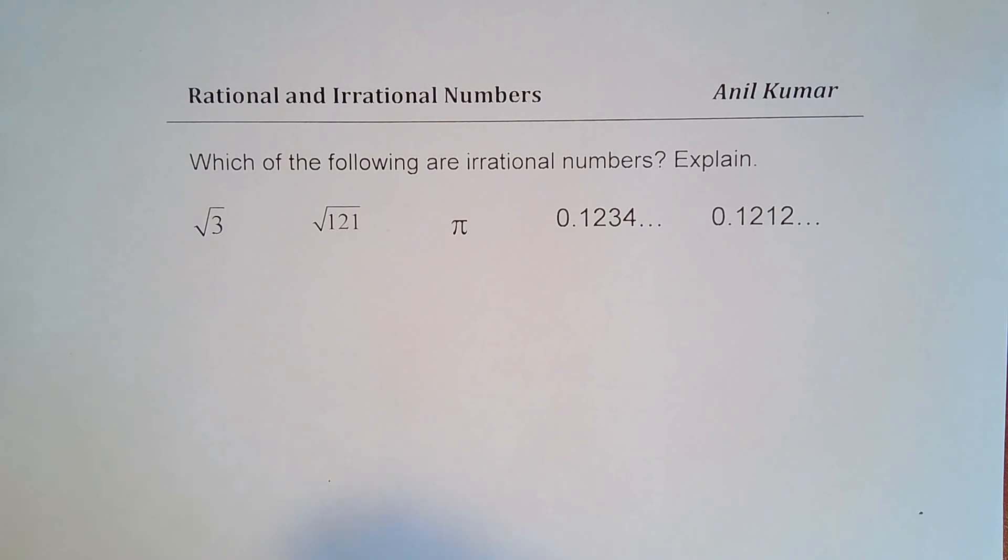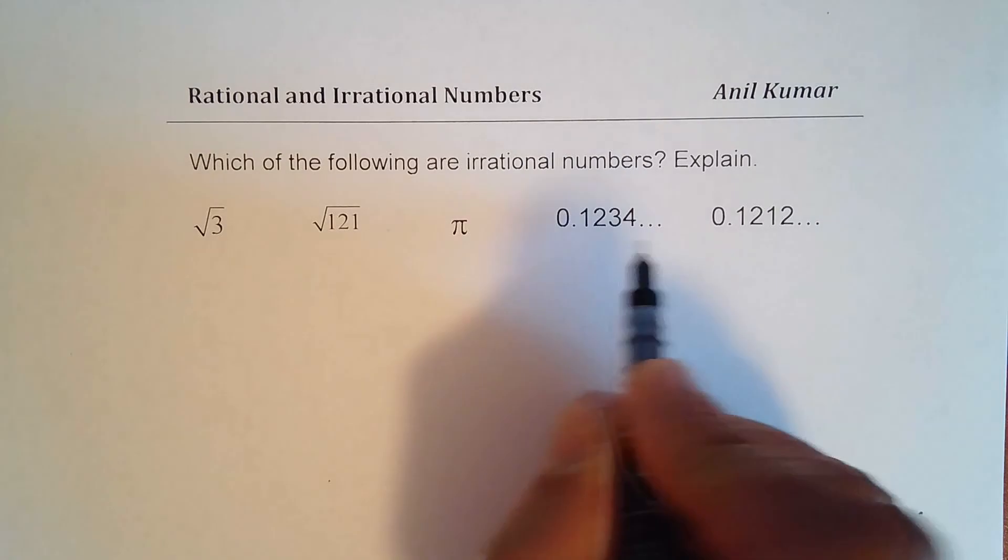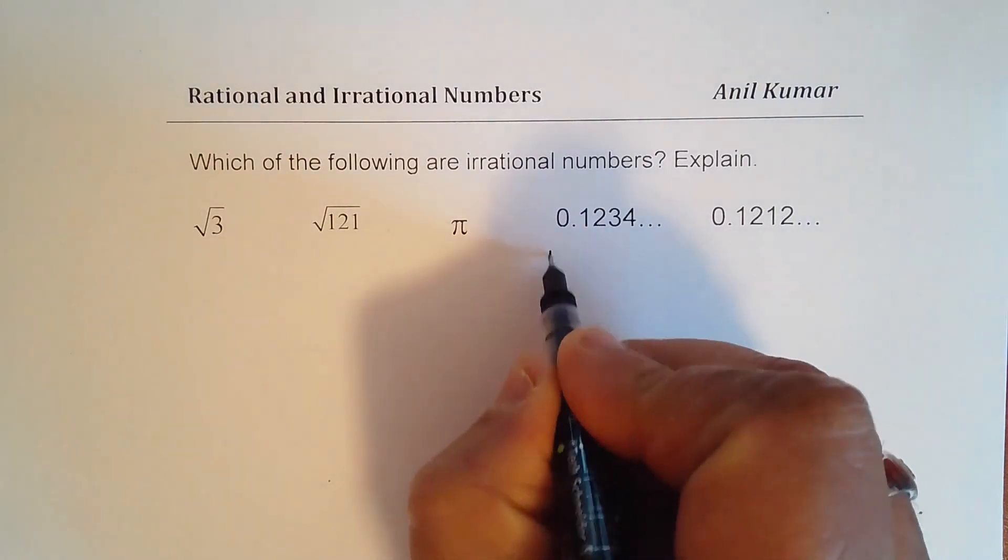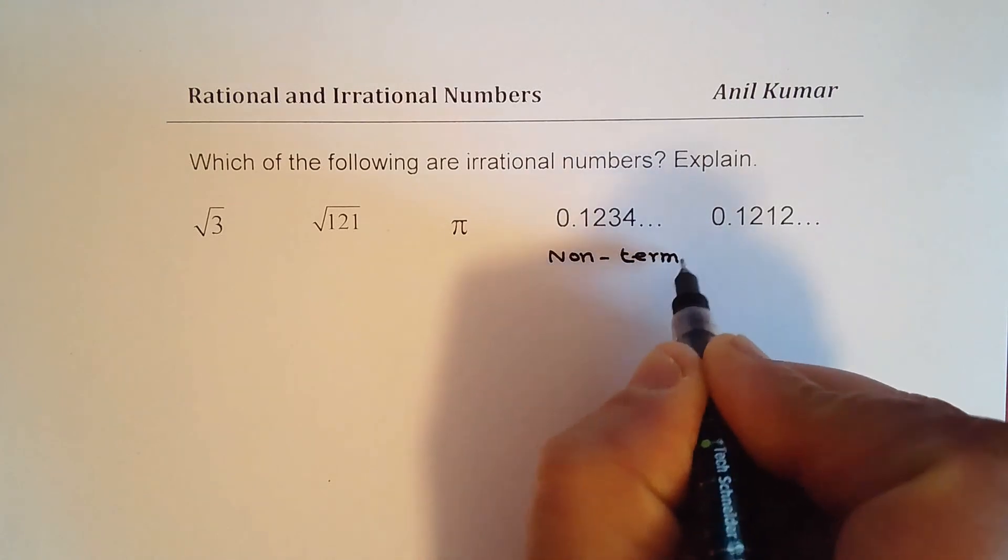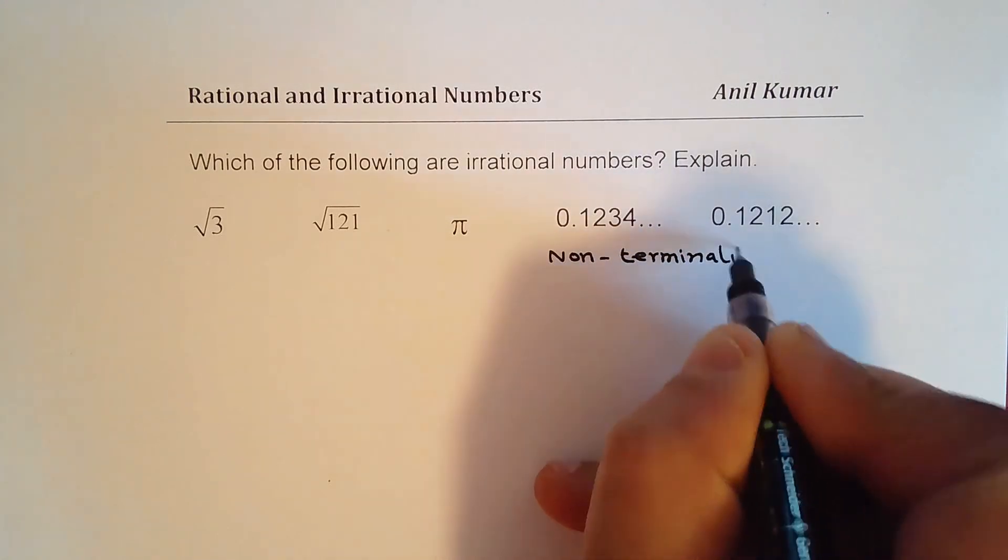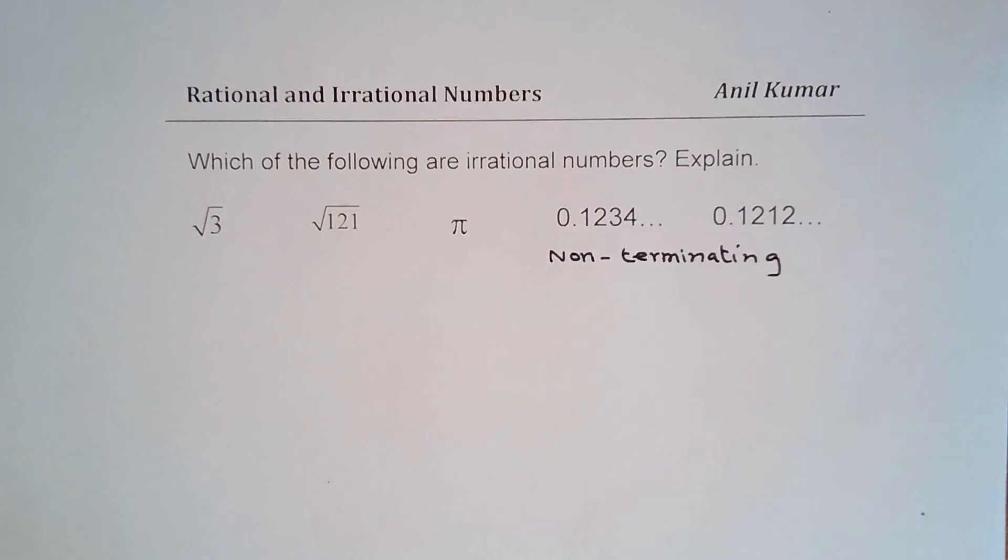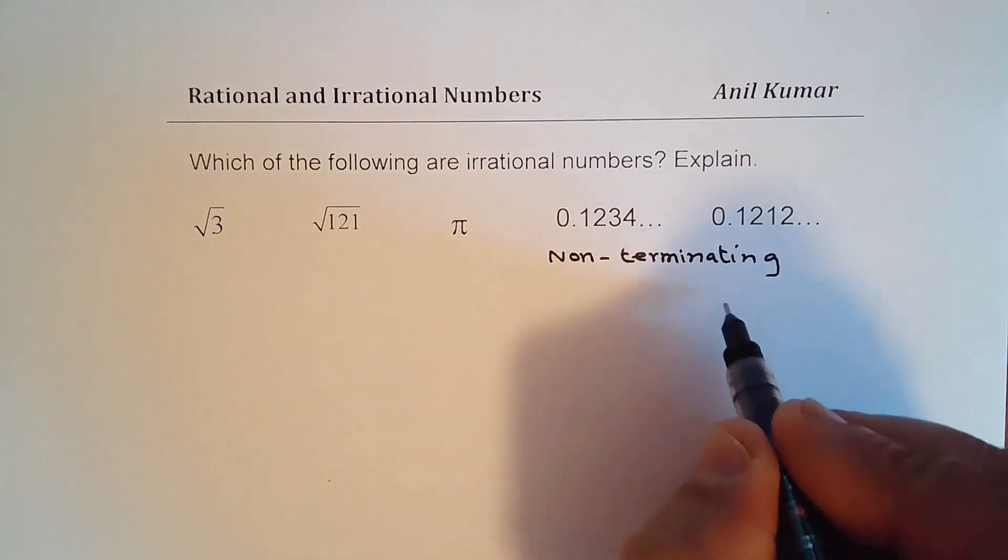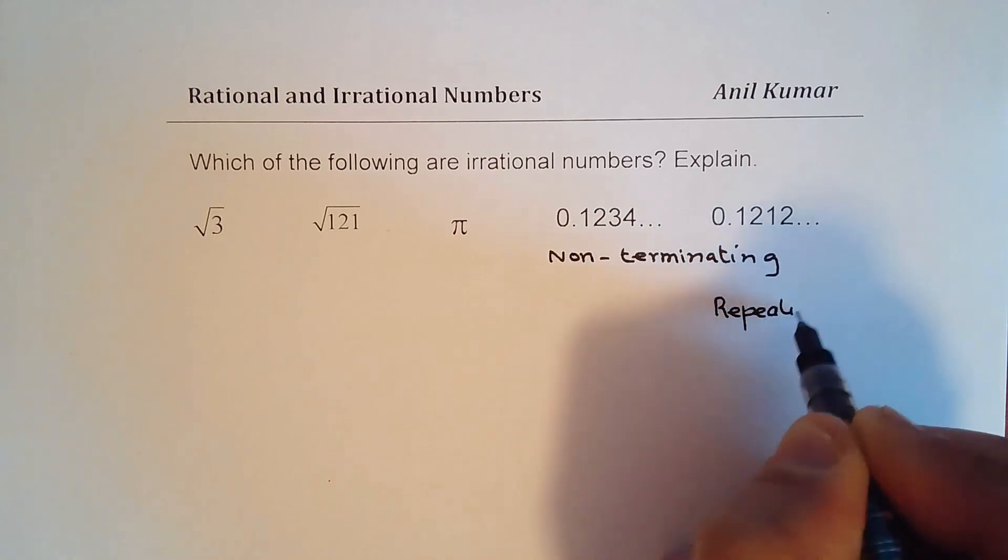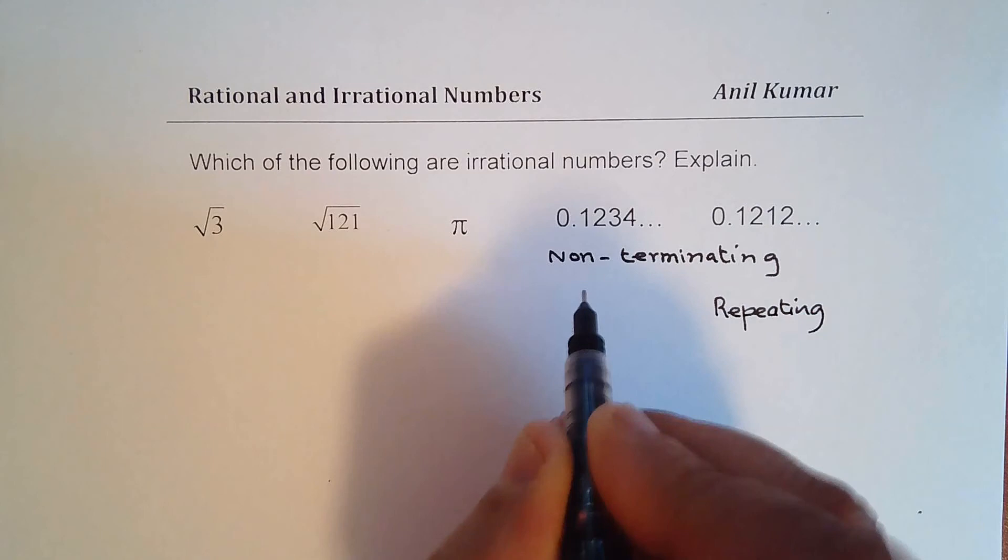So we have in this example the last two numbers as non-terminating. Let me write here. Both of them are non-terminating. However, the second one is repeating, and the first one is non-repeating.